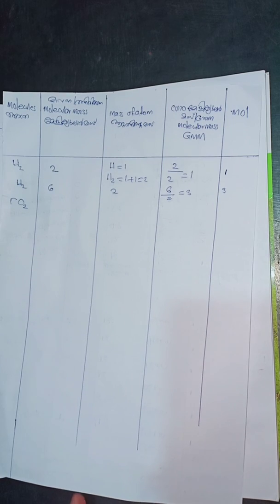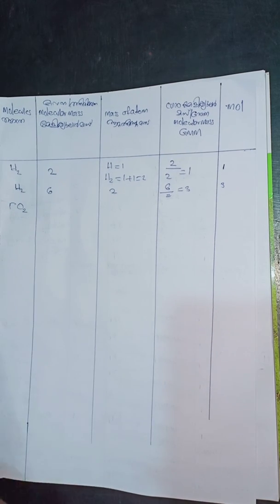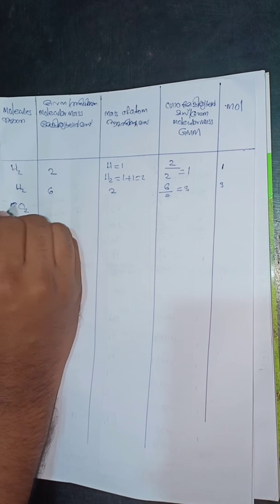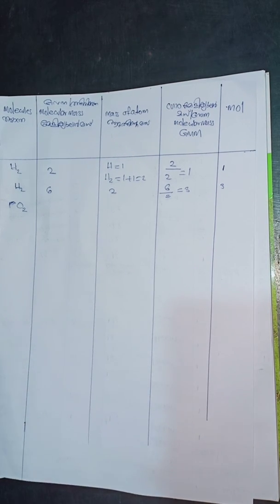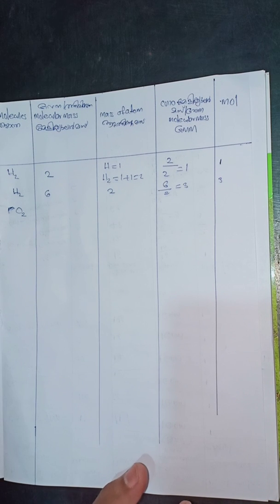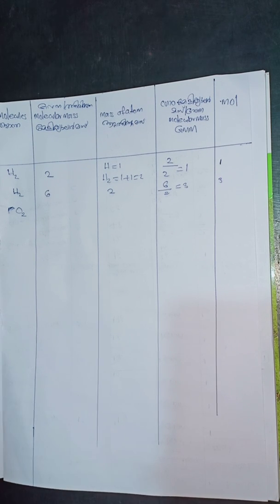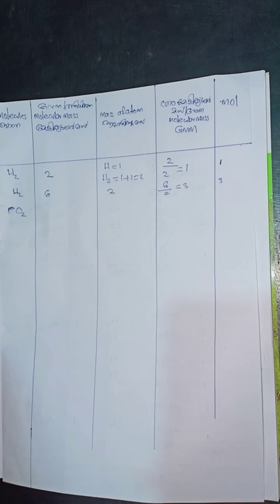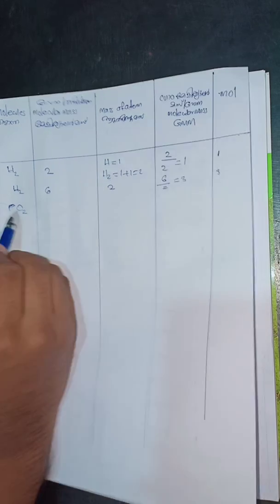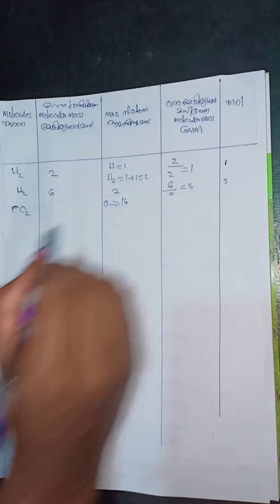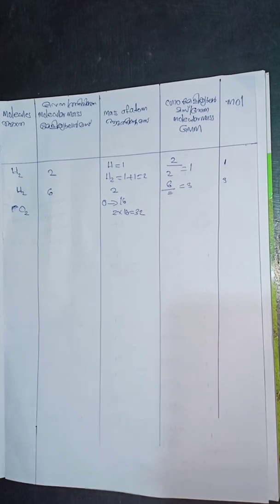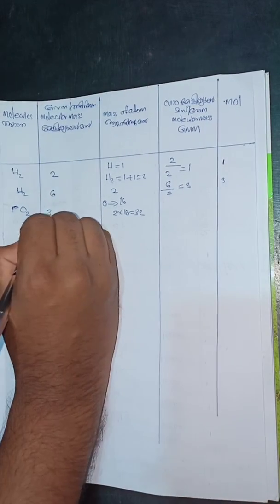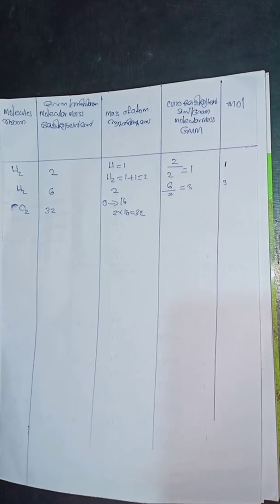Oxygen is O2. We calculate the molecular mass of oxygen. Atomic mass of oxygen is 16. There are 2 oxygen atoms: 2 × 16 = 32. So the molecular mass of O2 is 32 grams.